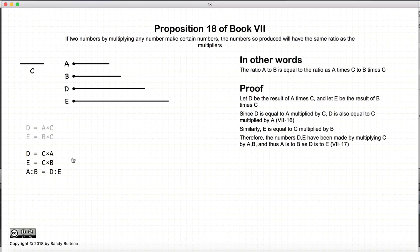And then from Proposition 17 of this book, the ratio of A to B will be equal to the ratio of D to E. And that's it. There is our proof.